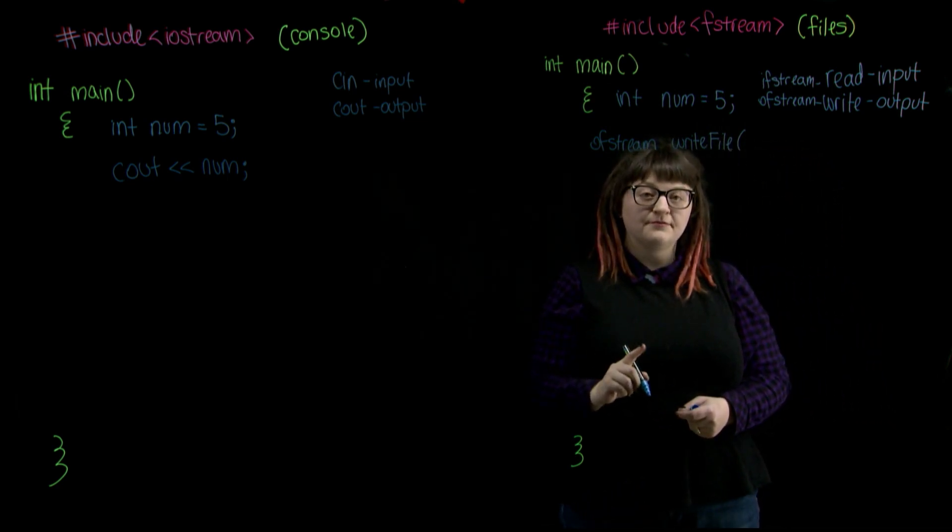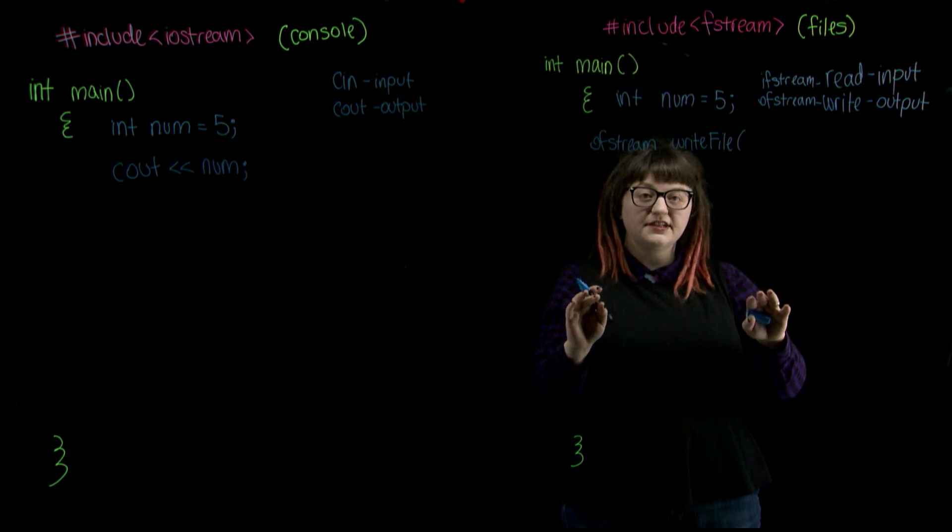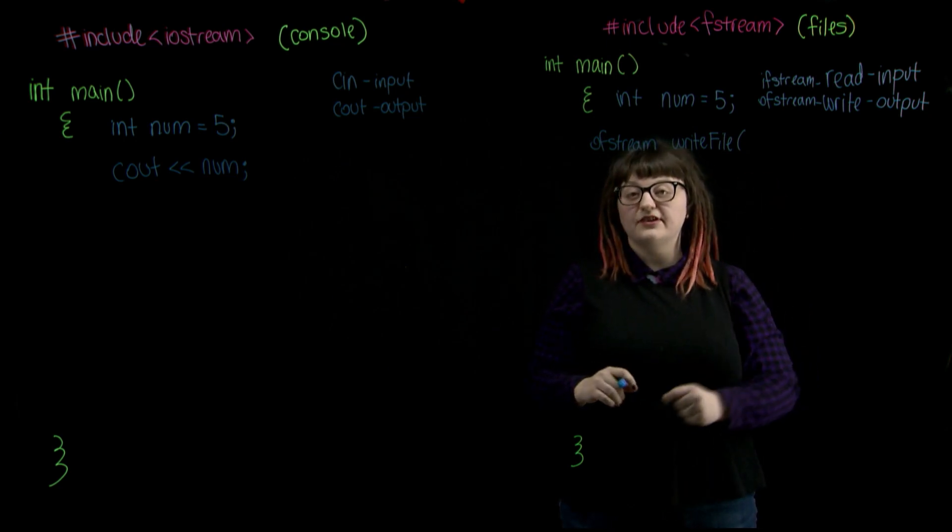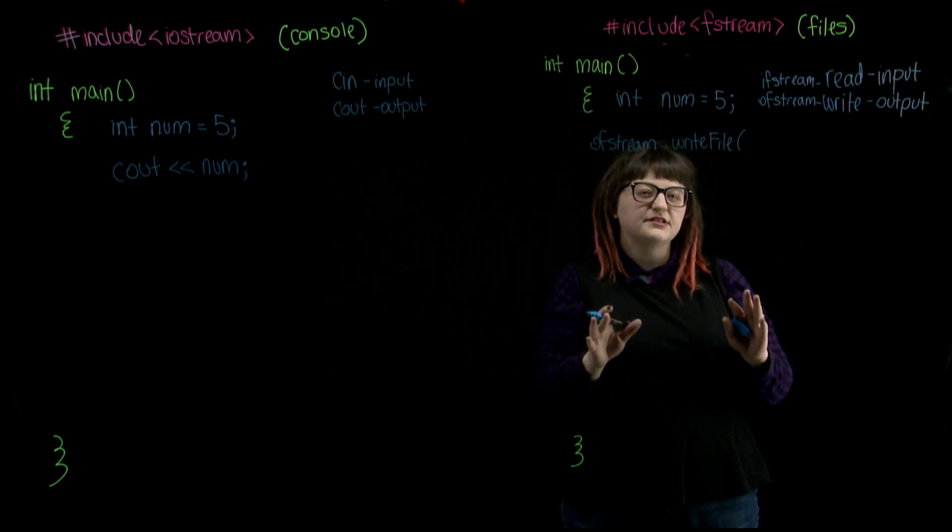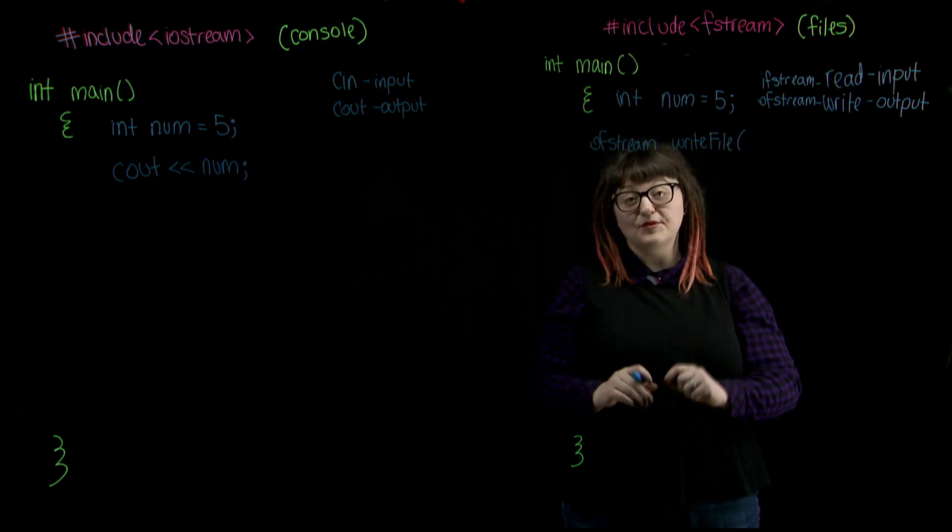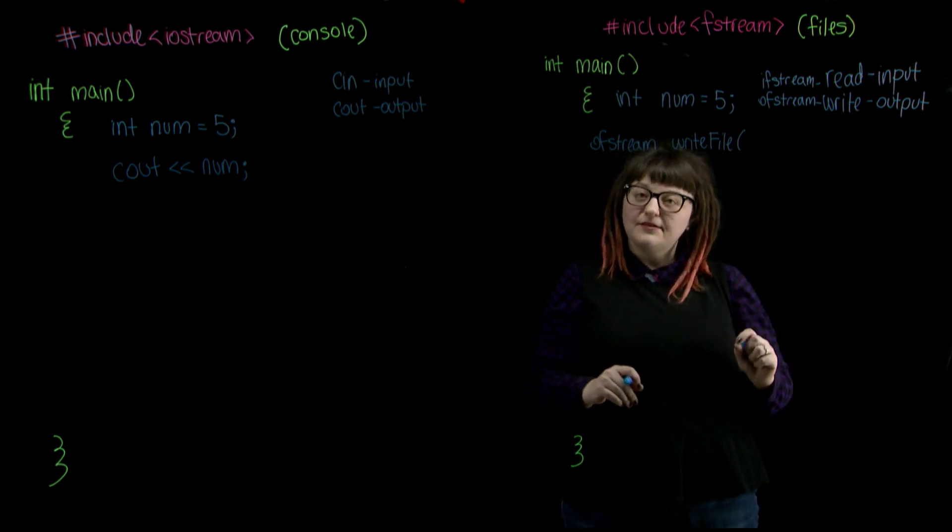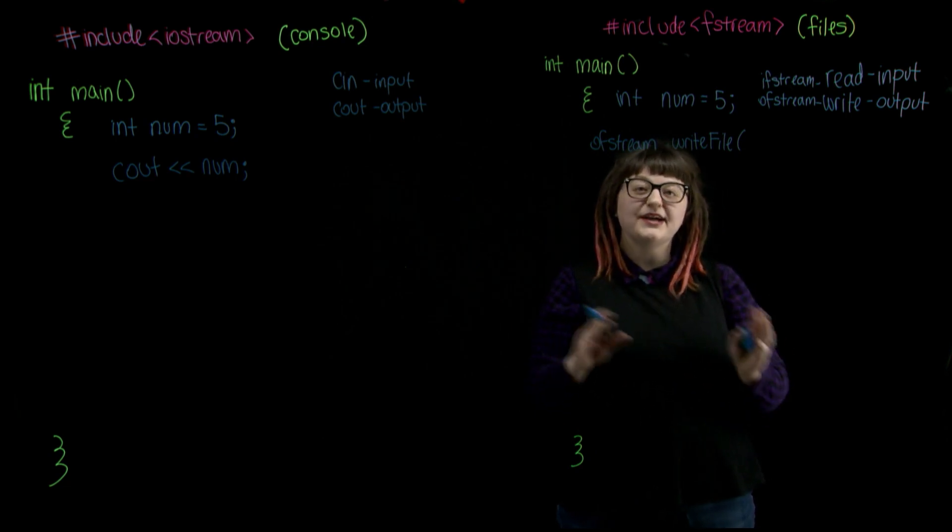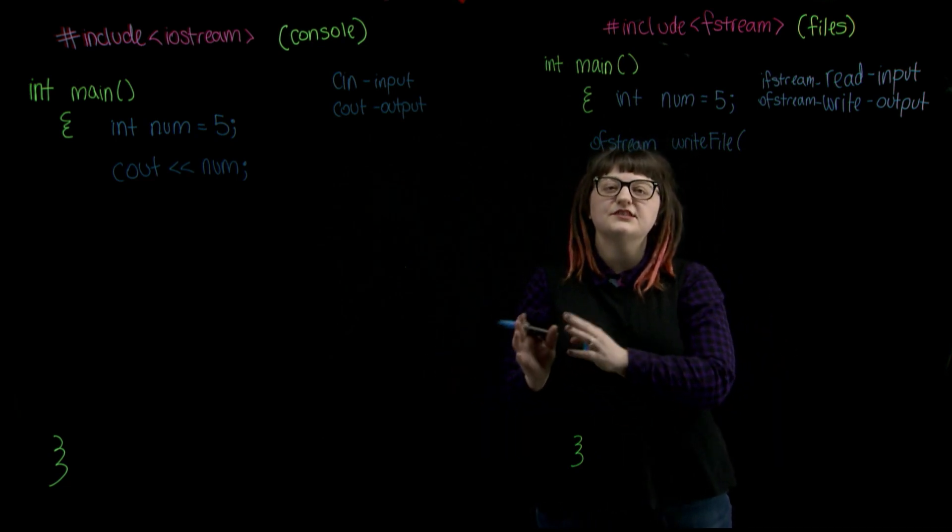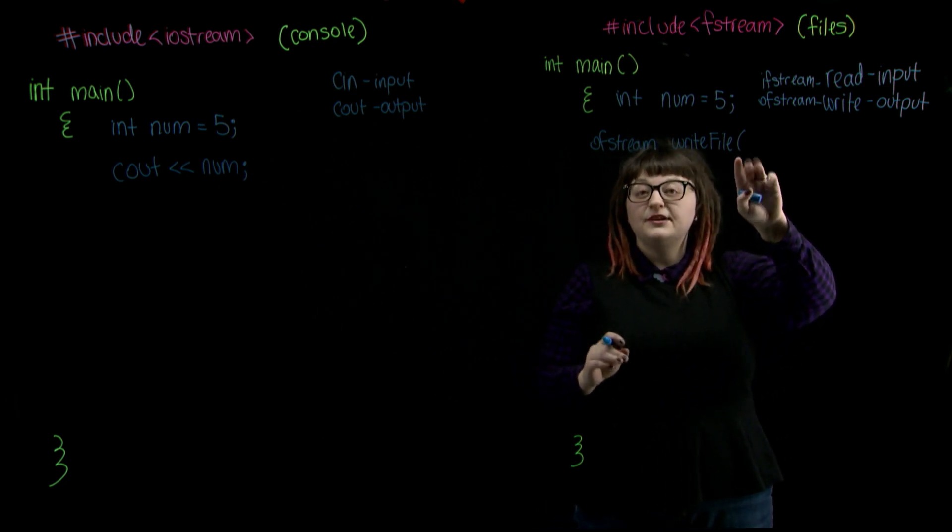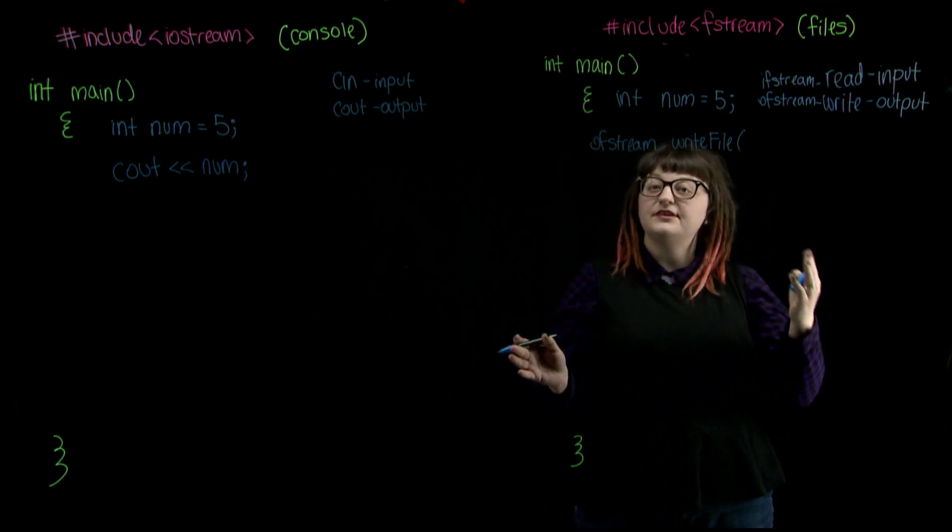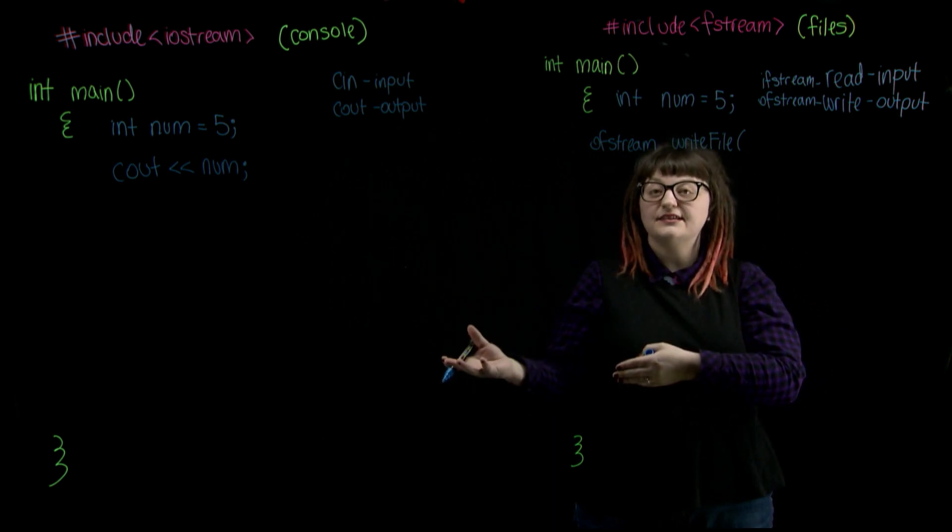With a regular variable, we would either stop our declaration here or initialize the variable with a value. With file objects, we don't initialize them per se, instead we give them a parameter. A parameter is a piece of information that gets passed to a function to be used within the scope of that function. Because of our parentheses here, we know that this declaration is going to be a function, so we can pass a parameter to it.